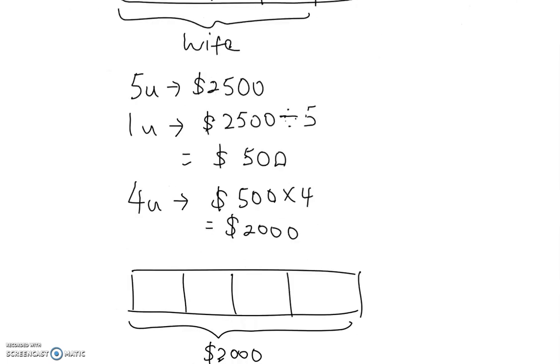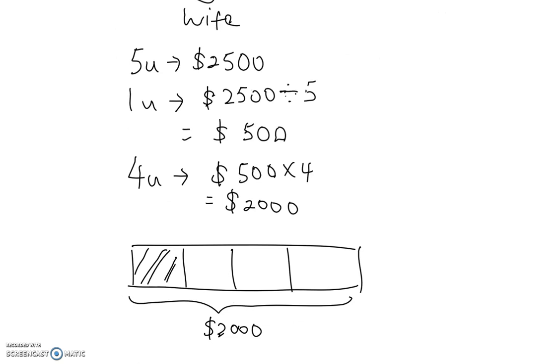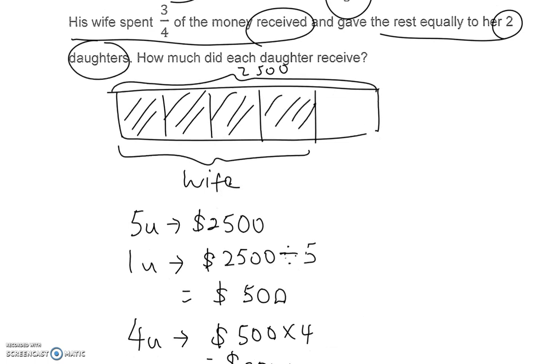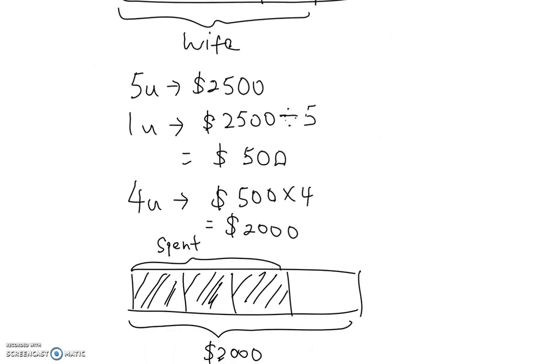Out of this $2,000, the wife spent 3 quarter. So 3 quarter, we're going to shade is what was being spent. Okay, and they said that the rest was divided equally to the 2 daughters. Now what is the rest? The rest would be this 1 unit. And this 1 unit somehow is being cut into 2 daughters. Daughter 1, daughter 2.